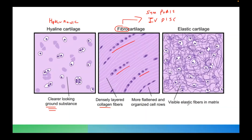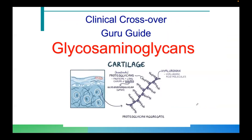The elastic cartilage has visible elastic fibers. Now, memorize this clinical crossover: glycosaminoglycans, or GAGs. The other name for glycosaminoglycans, particularly in biochemistry, is mucopolysaccharides. Please remember that.